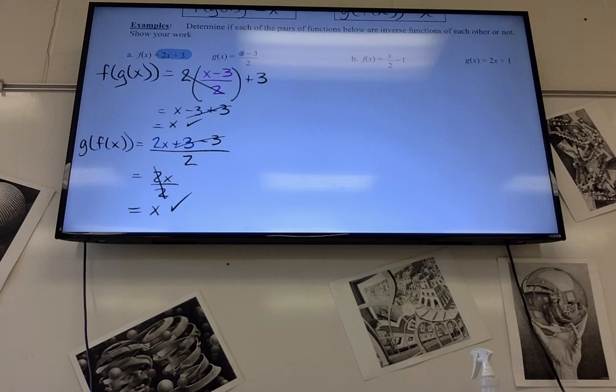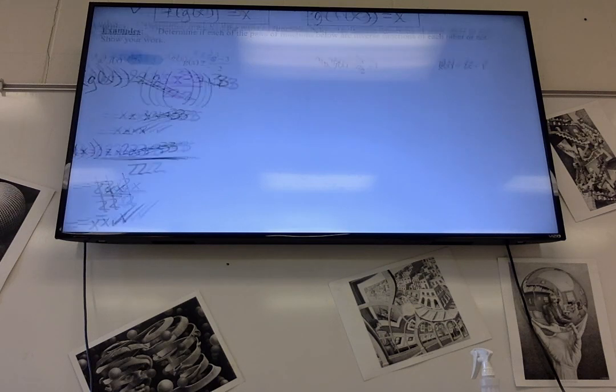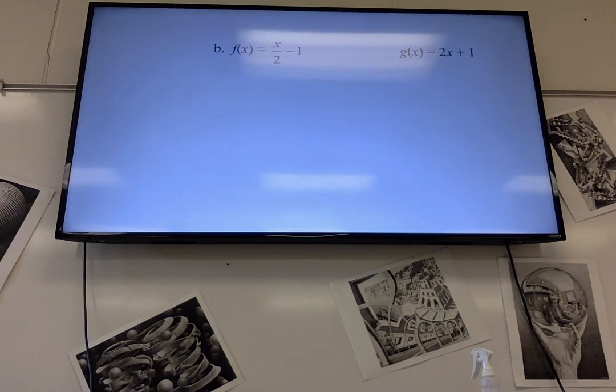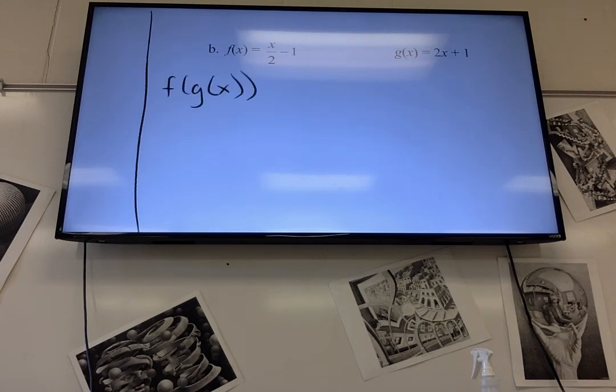The next one, same thing. We're trying to see if they're inverses. So we do f of g of x, which I'm going to put this right there. So in place of that x is 2x plus 1 over 2 minus 1.